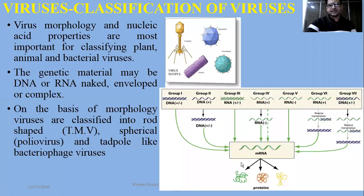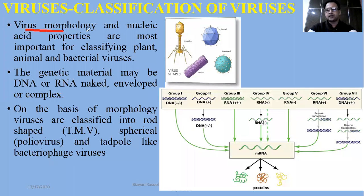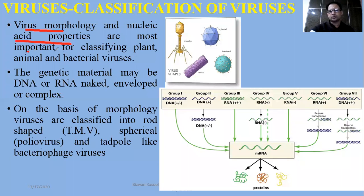According to the classification of viruses, sometimes the morphology of its structure is used as a basis. We can also create a classification based on the nucleic acid of the virus. Morphology and nucleic acid properties are most important for classification of plant, animal, and bacterial viruses.